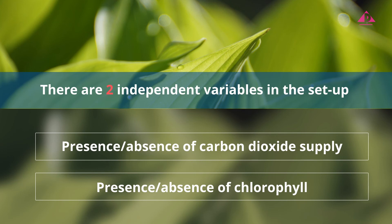The first one is supply of carbon dioxide when comparing leaf X and leaf Y. The second is presence of chlorophyll when comparing green parts and non-green parts of the variegated leaf.